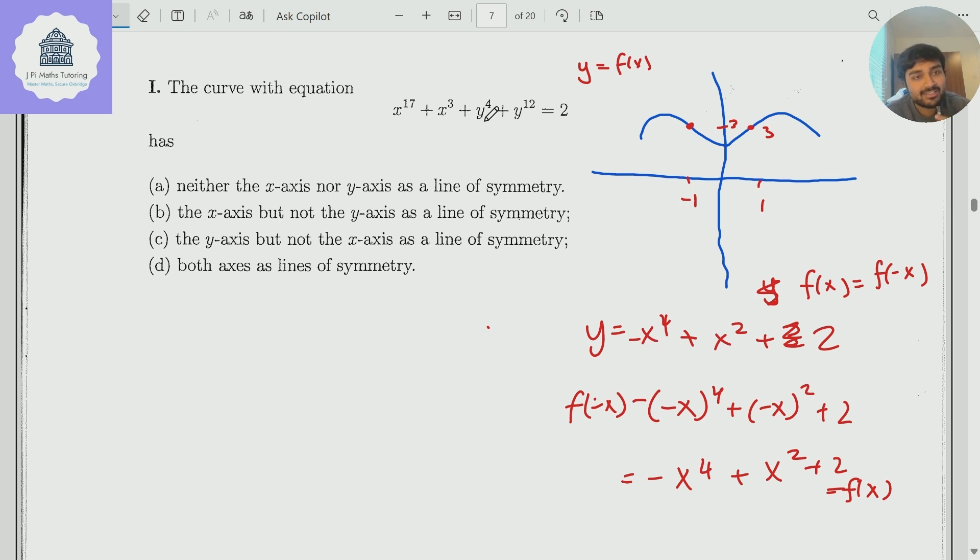So now I'm going to look at this and ask myself, well, let's replace y with minus y. And if I do that, minus y to the 4, minus y to the 12, everything else stays the same. And the beauty of this is because 4 and 12 are even numbers. Both those things there will be the same as this. So minus y to the 4 is the same as y to the 4, and minus y to the 12 is the same as y to the 12. So the equation does stay the same, and so therefore there is symmetry in the x-axis.